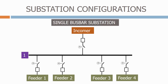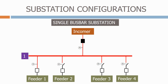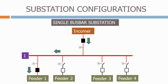Next we have a single bus bar substation. This is a simple configuration to connect a single incomer to several feeders. Firstly we close the isolator on the incomer before closing the incomer circuit breaker. The bus bar is now energised. We then close the isolator and feeder circuit breaker on one of the feeders. Power is now flowing from the high voltage incomer through to the low voltage feeder. The main issue with this configuration is that if the main incomer supply is lost, or a fault occurs on the common bus bars, or it needs to be maintained, all feeders will lose their supplies.